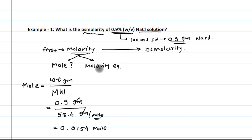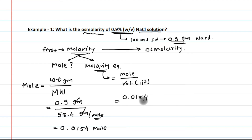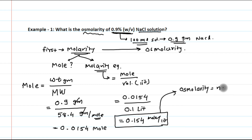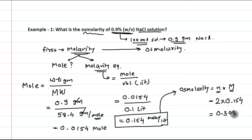We have found the moles. Now applying the molarity equation: molarity = moles ÷ volume in liters = 0.0154 ÷ 0.1 L = 0.154 mol/L. Now converting molarity to osmolarity using osmolarity = n × M: n = 2 for sodium chloride, so 2 × 0.154 = 0.308. This is the osmolarity of the 0.9% weight by volume sodium chloride solution.